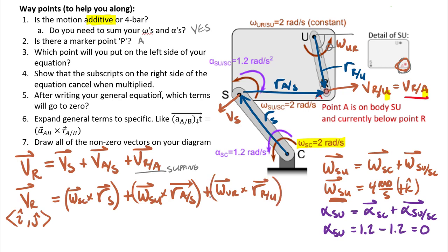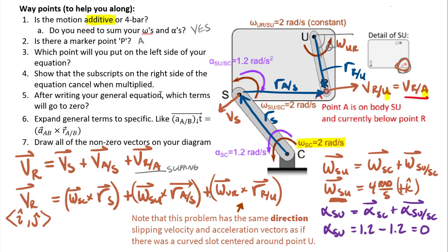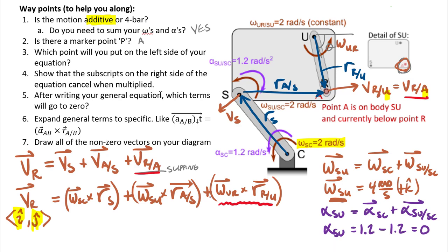Because we had a third body on this problem, we could write an equation for the slipping term. Without a third body — for simple slotted motion — the departure velocity V_{R/A} might just be left in its original form. In this case we had enough information to define it, since we needed both unknowns on the left to be solvable from the right-hand side.